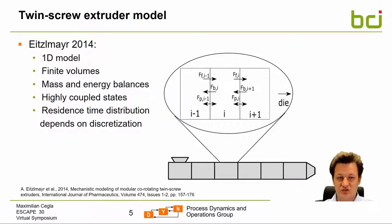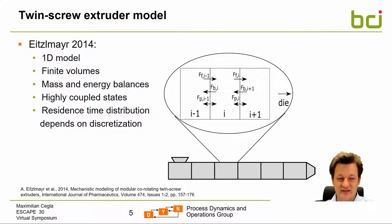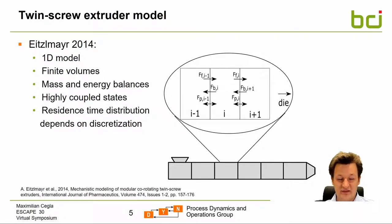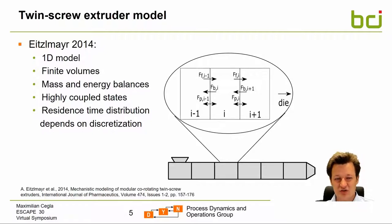The twin screw extruder model we used was originally developed by Andreas Eitzelmeier in 2014. It is a one-dimensional model describing the changes of states along the extruder from the feeder towards the die. It discretizes the extruder length into finite volumes, and for all those finite volumes mass and energy balances are solved. The complexity of this model is very high due to the various highly coupled states. The big drawback concerning residence time distributions is that the RTD itself depends on the discretization length.